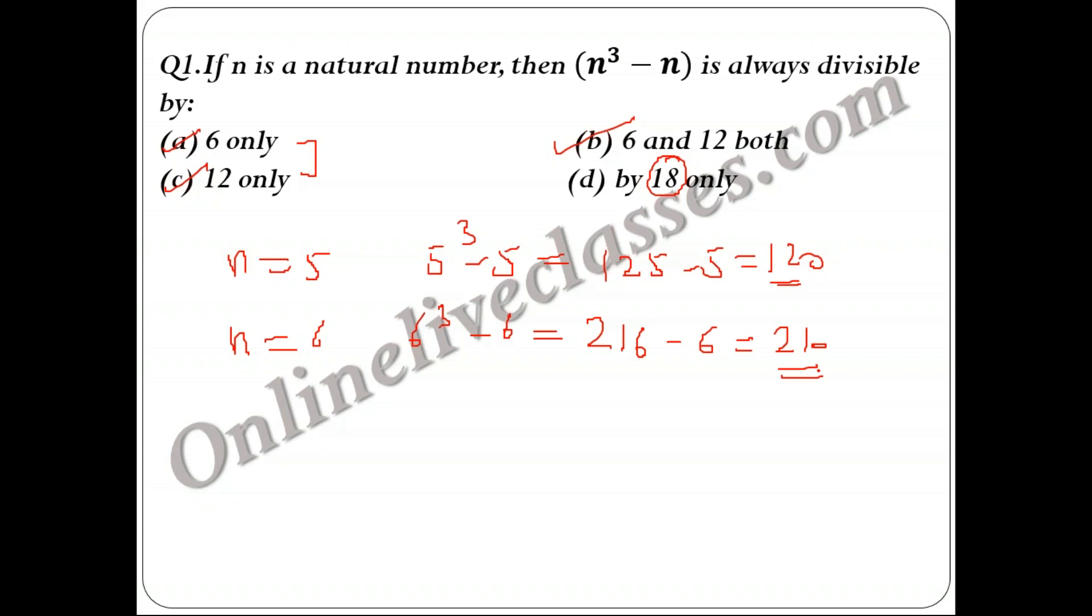Now see here that in your answer there is some variation. Is 210 divisible by 6? Yes, it is divisible: 6 × 35 is 210. Is 210 divisible by 12? The answer is no. So this means it is only divisible by 6. Here you need to keep in mind that you should put one or two values and check that the condition is not being violated.